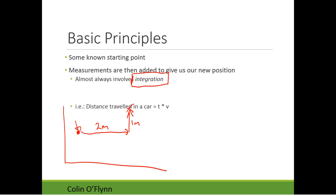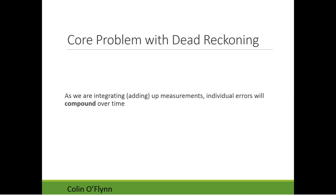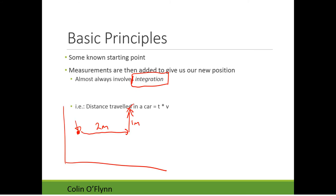This is a basic system you'll probably be using entirely in your robot, and it can be made fairly accurate. The only real core problem is that if your measurements themselves are not very accurate, all of your errors are never going to be fixed. If you actually traveled 2.1 meters instead of two meters, you'll never be able to fix that in the future.